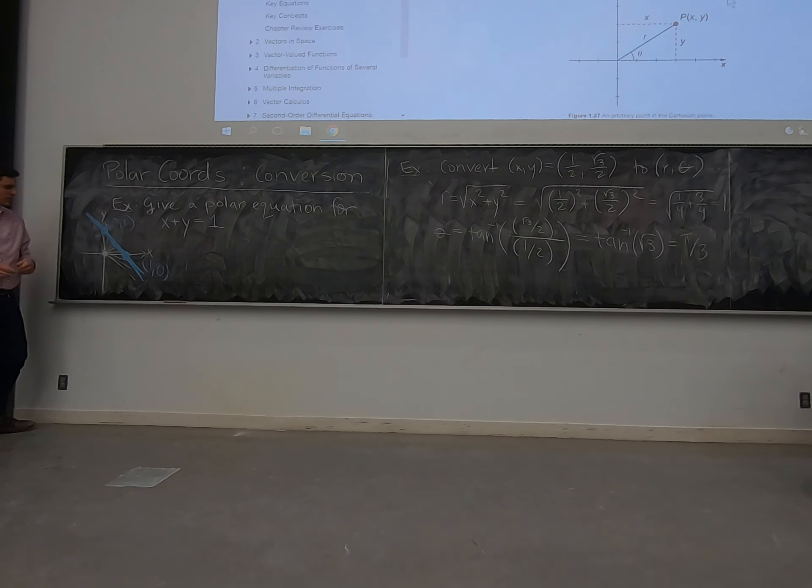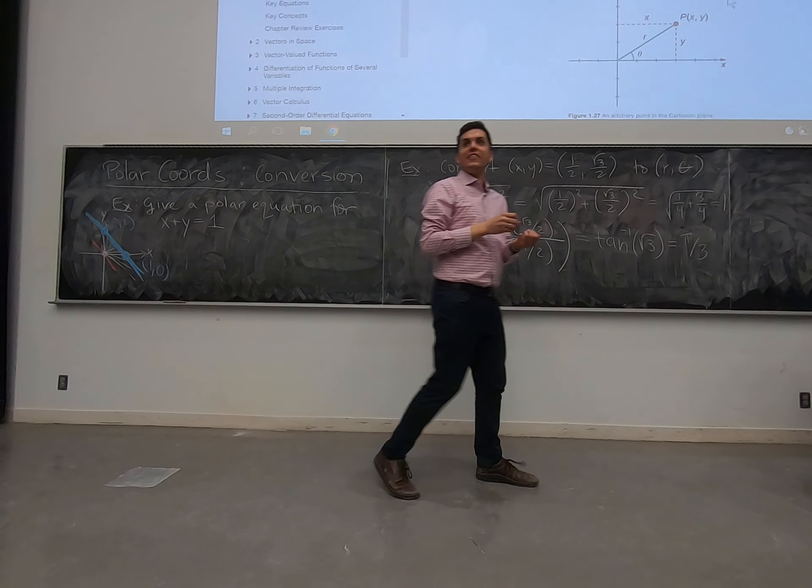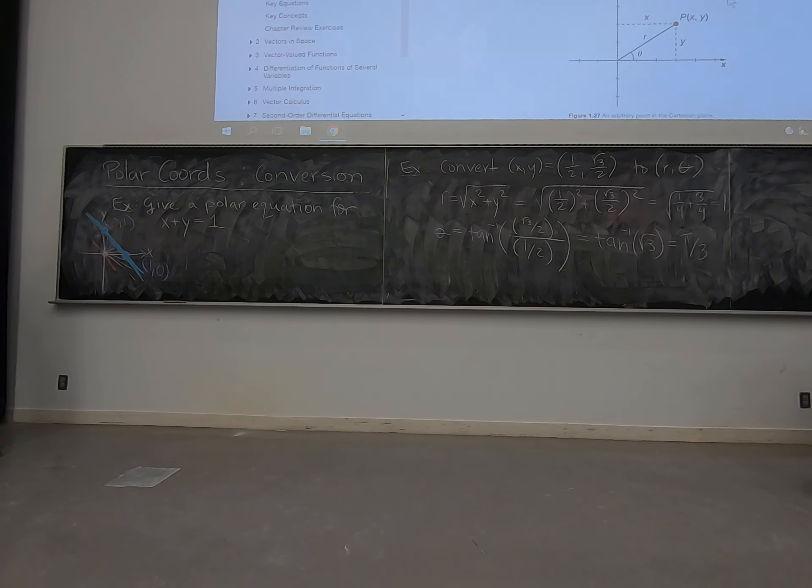So our equation is going to have some kind of singular behavior parallel to this line. What are those angles? What angle is parallel to x plus y equals one? Starting from the x-axis, is it 3π by 4? Yeah, 3π by 4. And this guy? Negative π by 4.